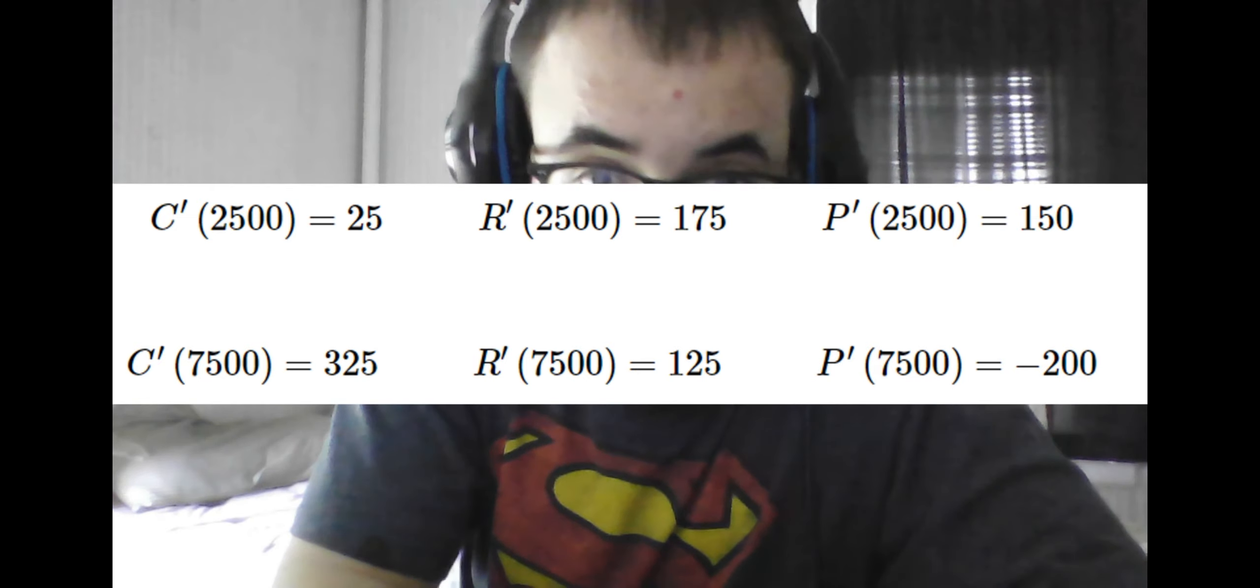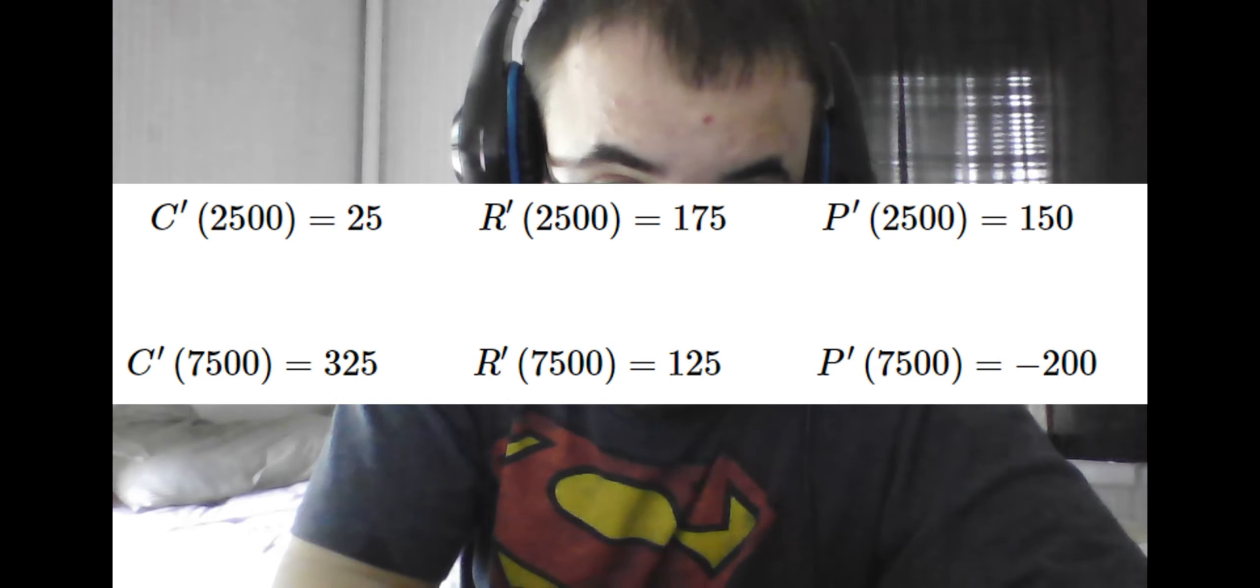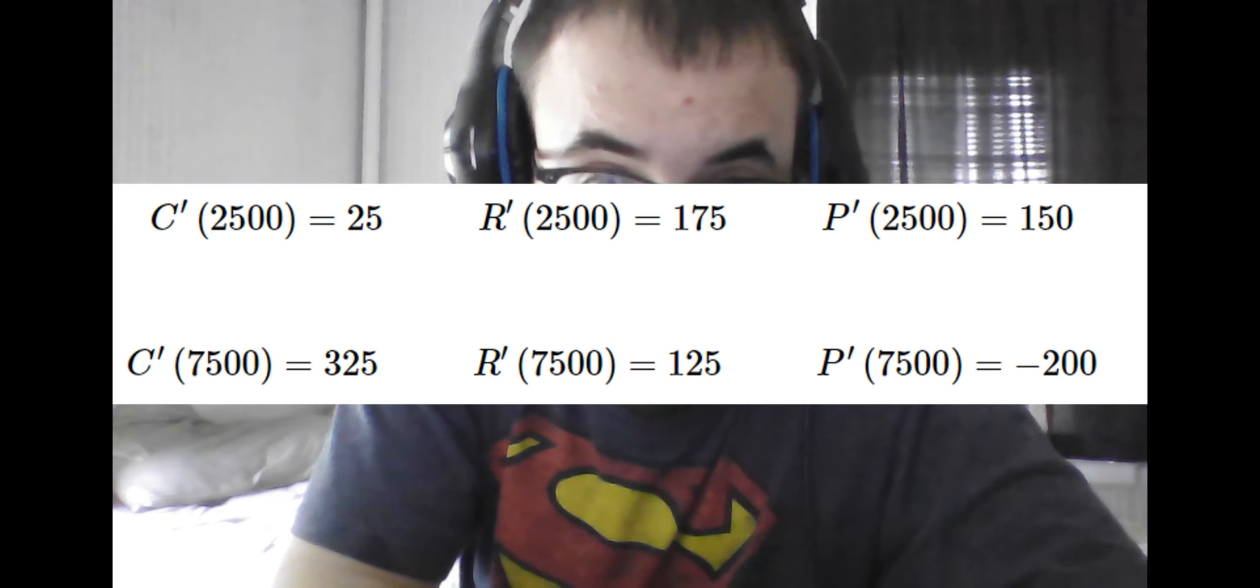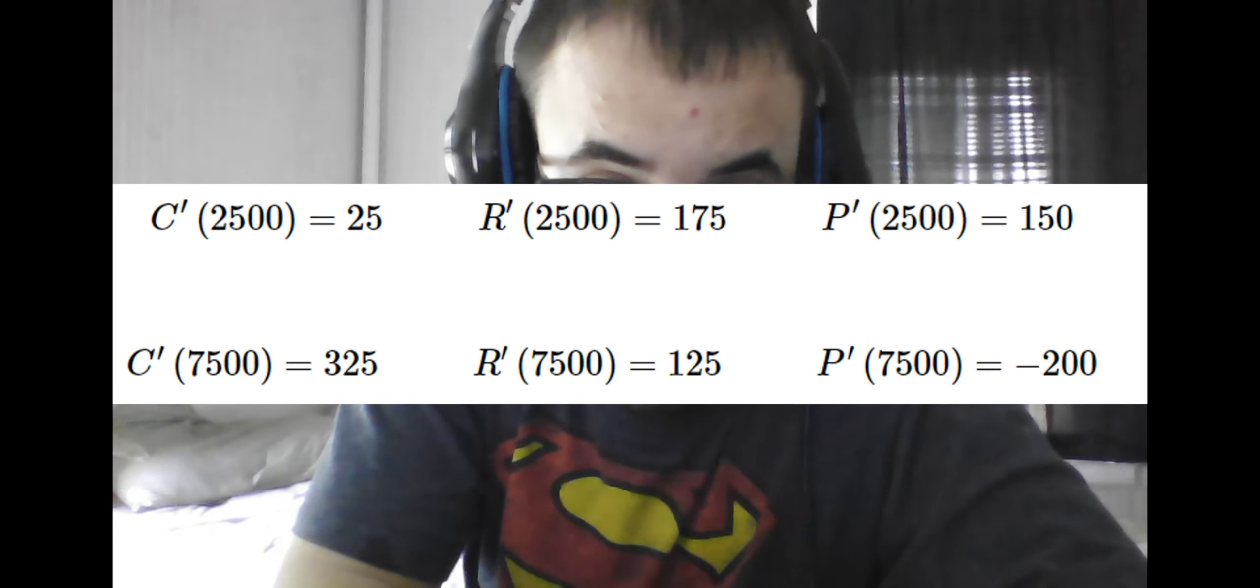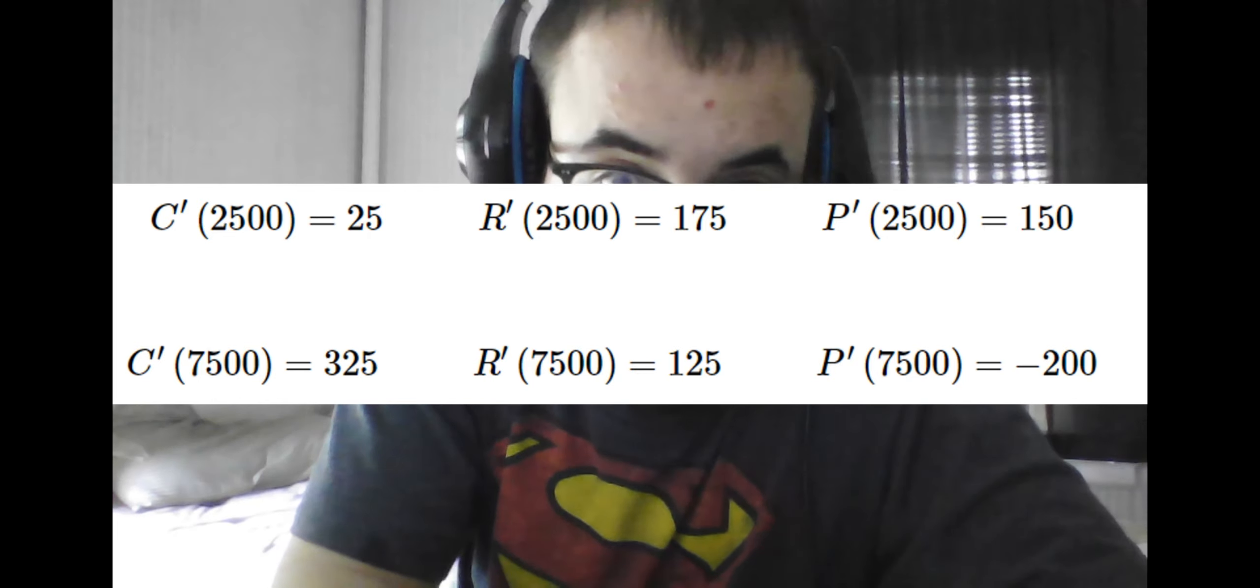Similarly, we can see that because we know the marginal functions at 7,500, it will cost an additional $325 to manufacture the next one.